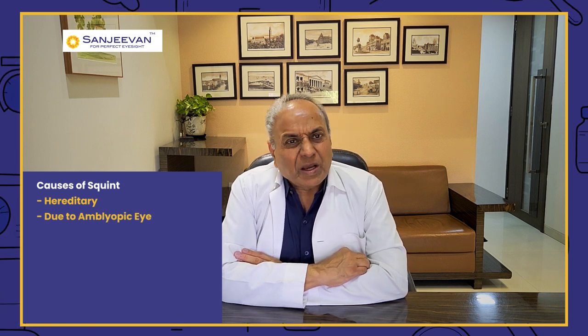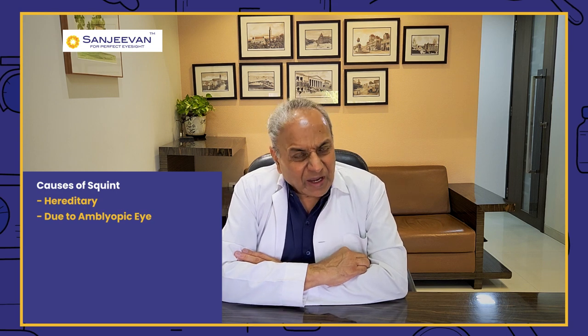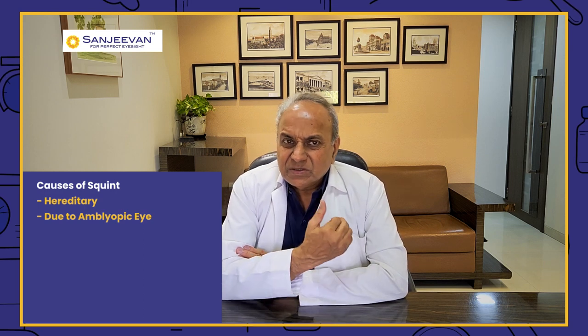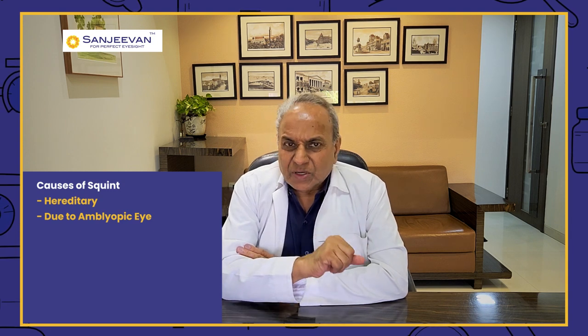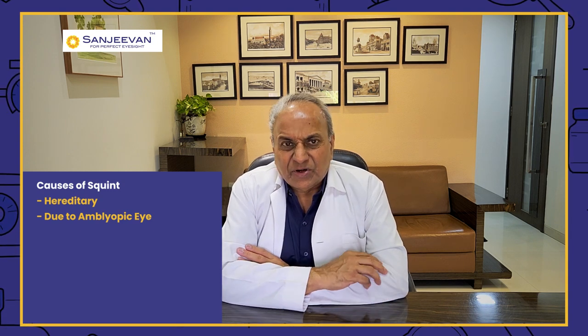Now, what are the causes of squint? Squint can be hereditary — it runs in the family from generation to generation. Secondly, it can be associated with an amblyopic eye — if one eye does not have as good vision as the other eye, that is called an amblyopic eye, which we have discussed in another video.